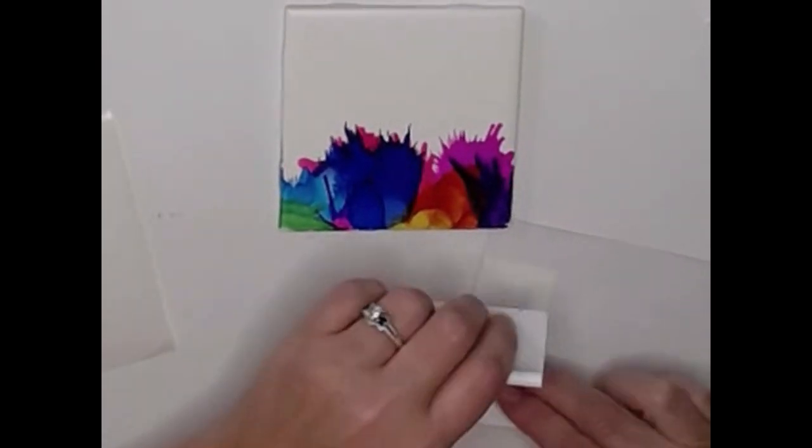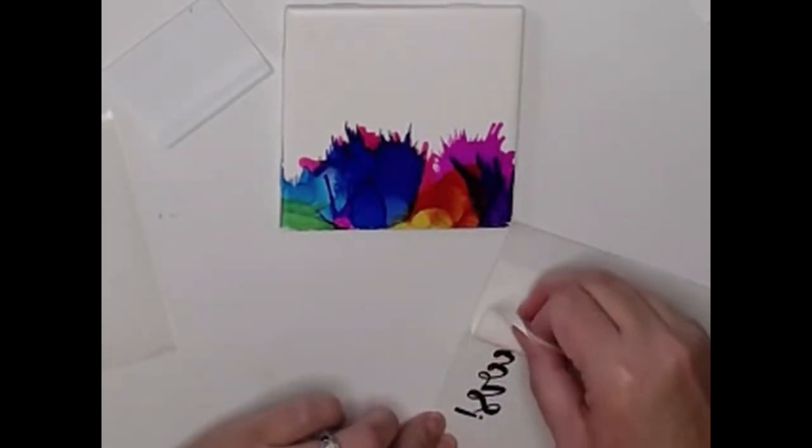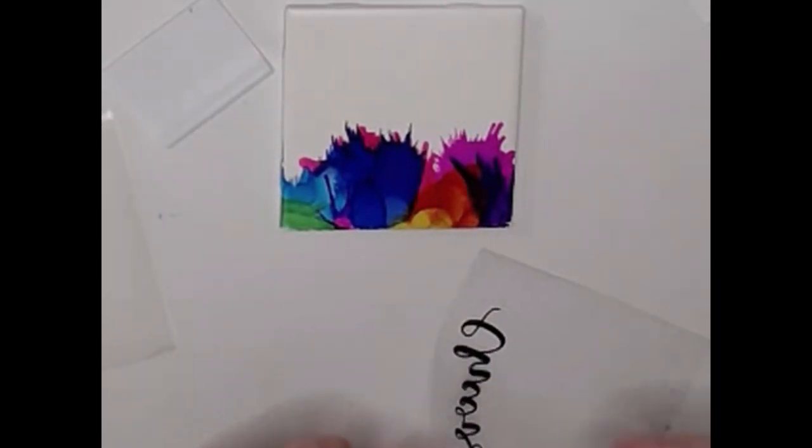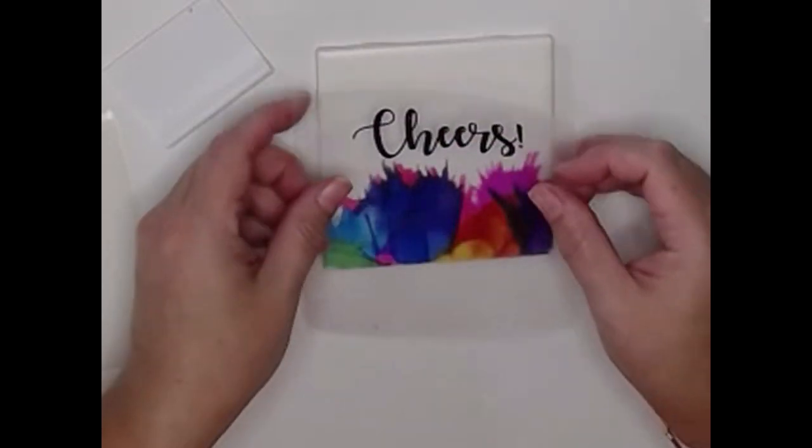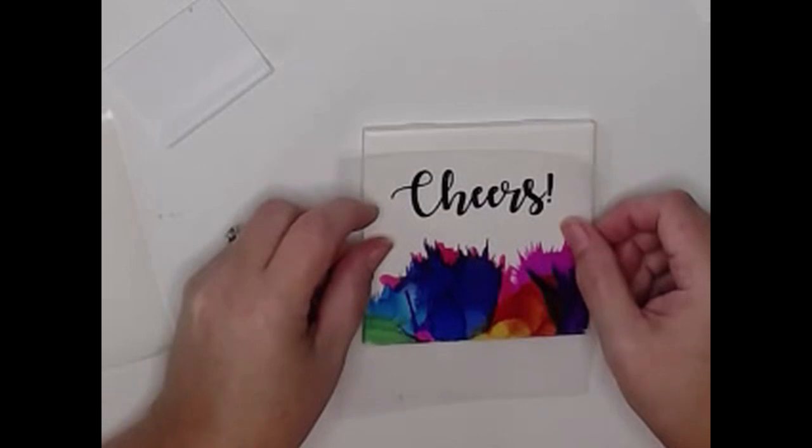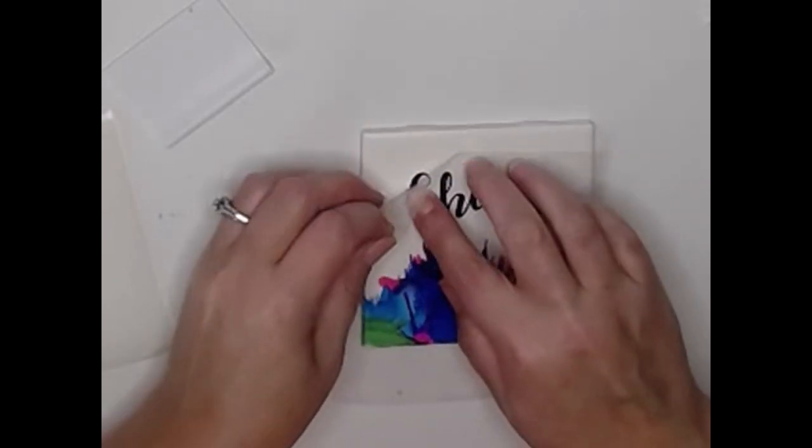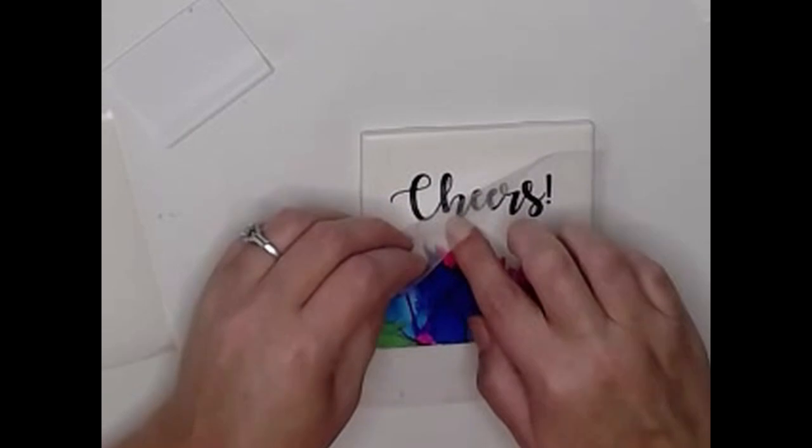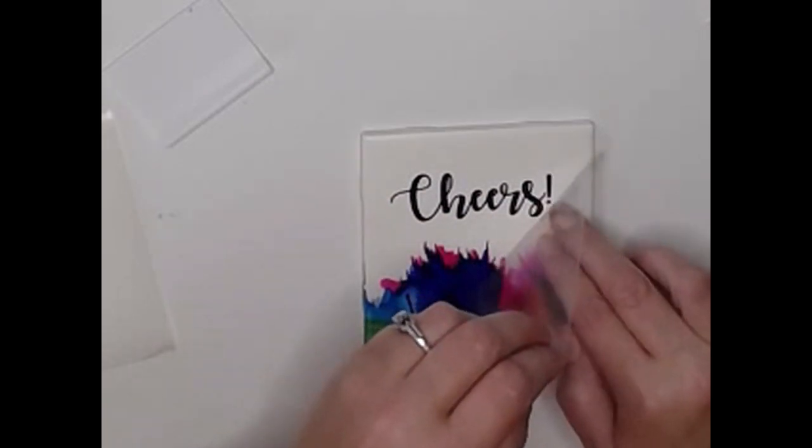Now if, like here, some of the lettering wants to come up when you're trying to pull the backing off, just use your scraper tool and put a little more pressure on the back side. Then it's simply a matter of laying it over the coaster so that it's centered, and a little light pressure from your fingers as you pull that transfer tape off is all it takes.